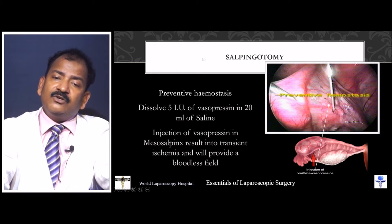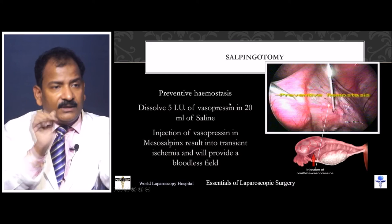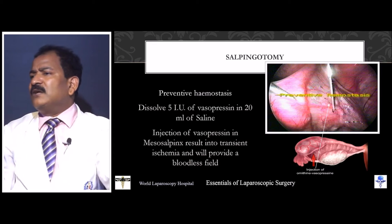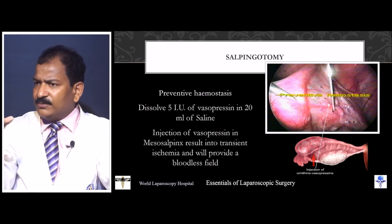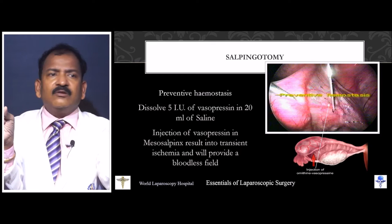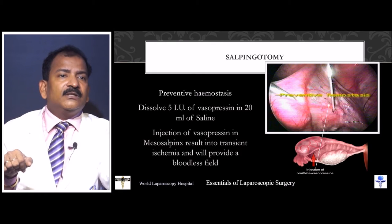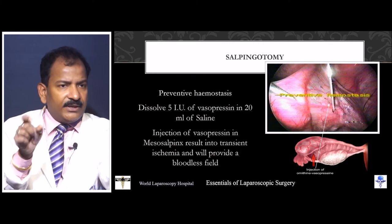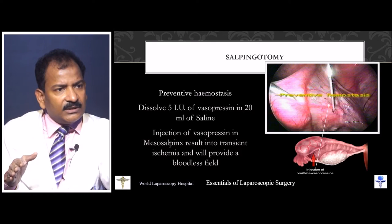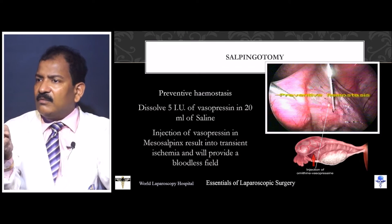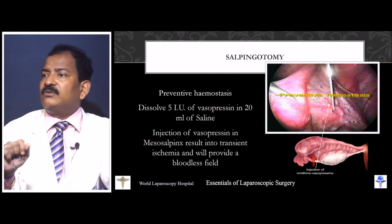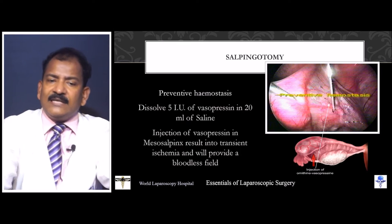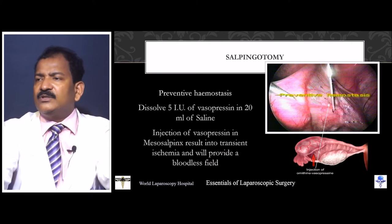When doing salpingotomy, you generally do not need to suture if the trophoblast is small. If it is about 3 cm you may need to approximate — that is salpingorrhaphy. Salpingotomy can be performed when the trophoblast is 10–15 mm only. Here you can see the ectopic; a Babcock-type grasper is used. A spinal needle is placed on the mesosalpinx and 5 IU of vasopressin diluted with 20 ml of saline is injected.